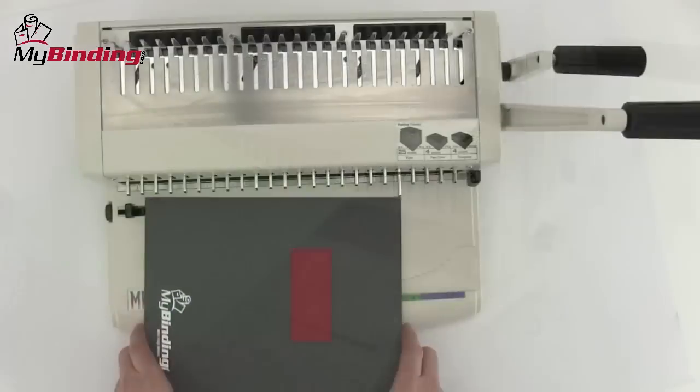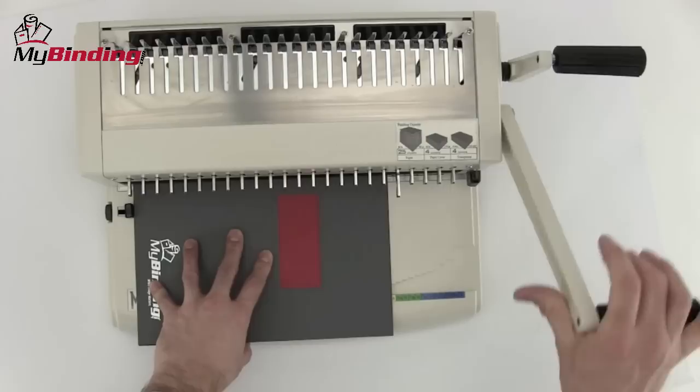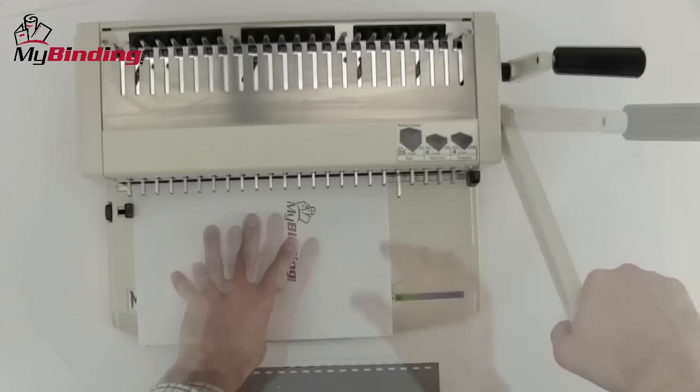With scrap paper, make your first punch, and if all is okay, begin with your project. Start with the covers and punch through all the sheets, punching in batches of 25 sheets or less per punch.